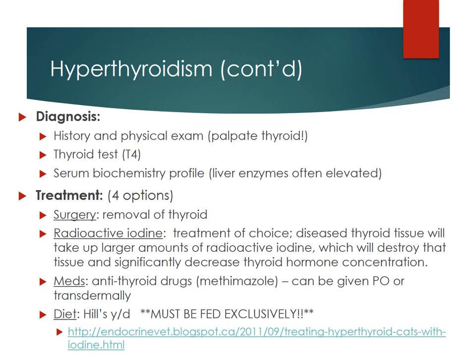To diagnose hyperthyroidism, we take a history and physical exam noting the tachycardia, murmur, and palpable thyroid. We'll also do a thyroid test — a T4 — to see elevation in thyroid hormone, plus blood work where we'll see an elevation in liver enzymes on serum chemistry, which is very common.